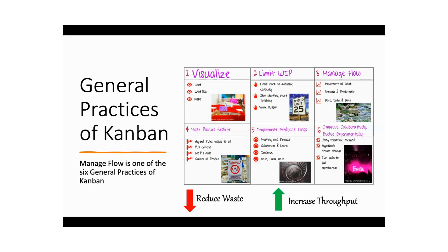When you limit the WIP and create a pull system, you only pull work when there is capacity available for pulling that work. You follow the agile concept of stop starting and start finishing — finish the work you have in hand first, rather than starting new work and keeping it waiting. You start looking at how to generate value from the work you are doing.